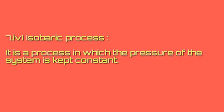The isobaric process is a process in which the pressure of the system is kept constant. That means in an isobaric process, the pressure of the system is not changed — the pressure of the system is kept constant throughout the process.